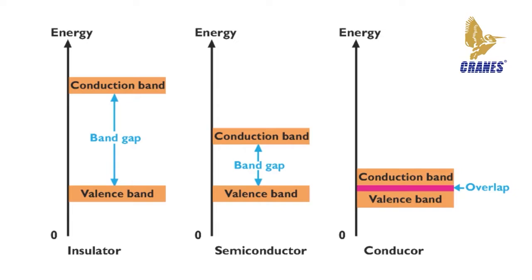In semiconductors, the band gap is smaller, allowing an electron in the valence band to jump into the conduction band if it absorbs a photon. The band gap depends on the semiconductor material.